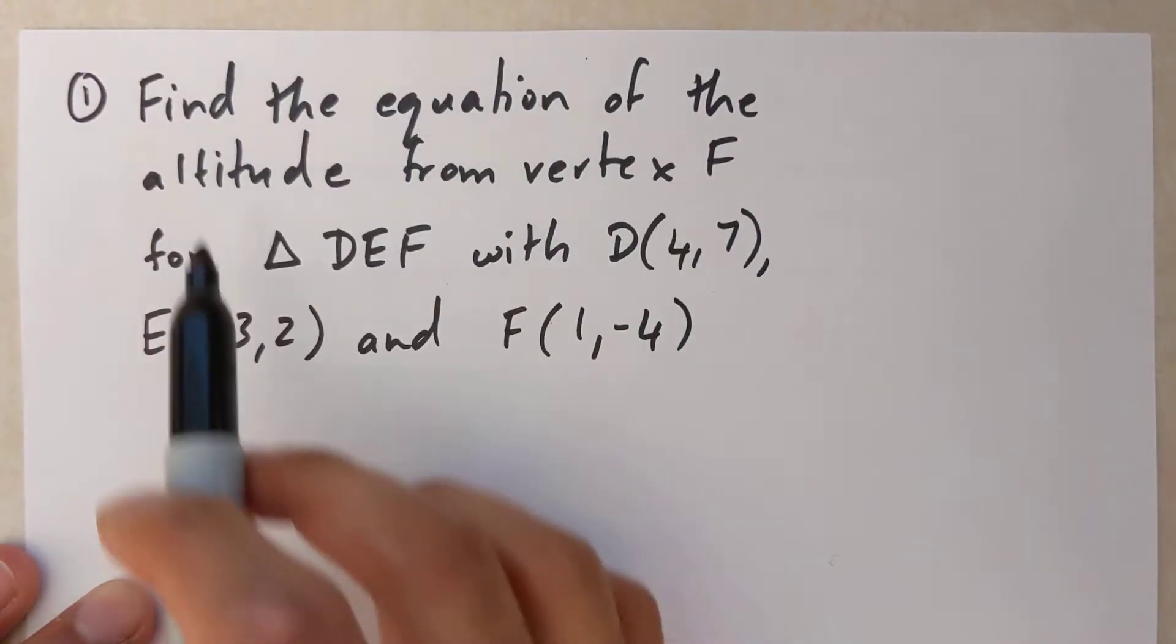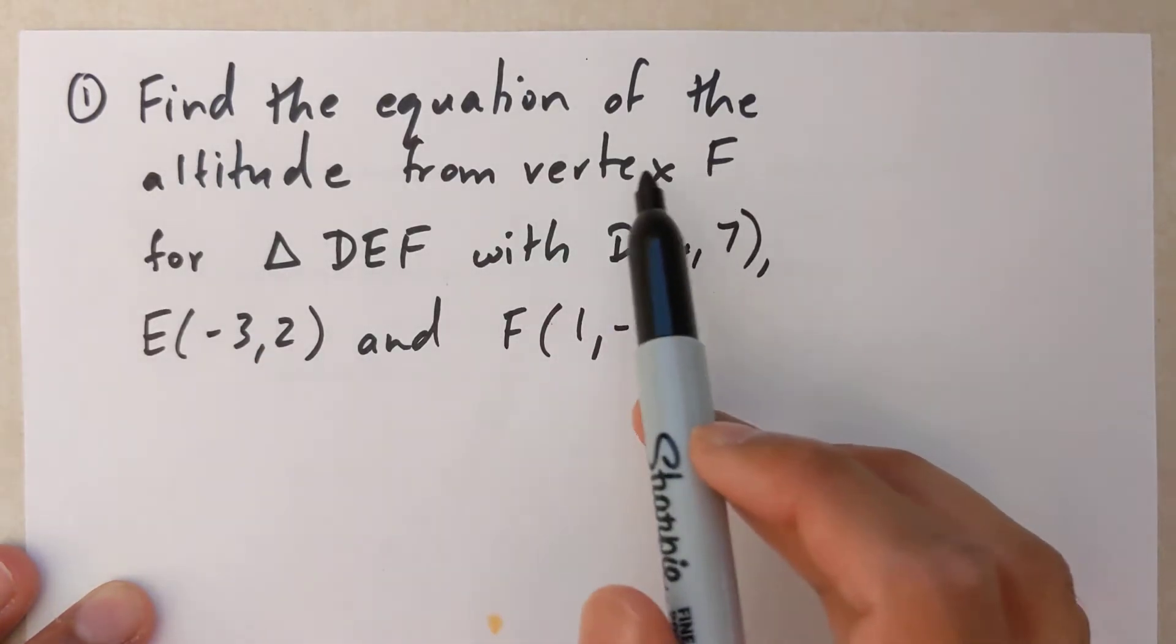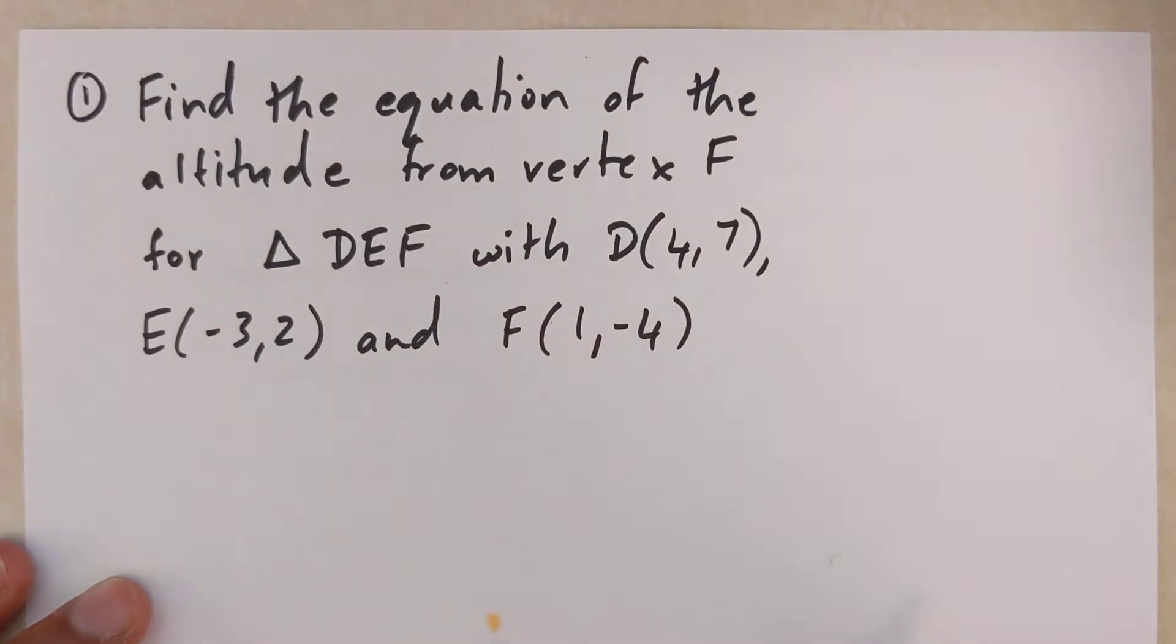In this question it says find the equation of the altitude from vertex F. Anytime you're finding an altitude they'll always give you a vertex for triangle DEF with those three points.